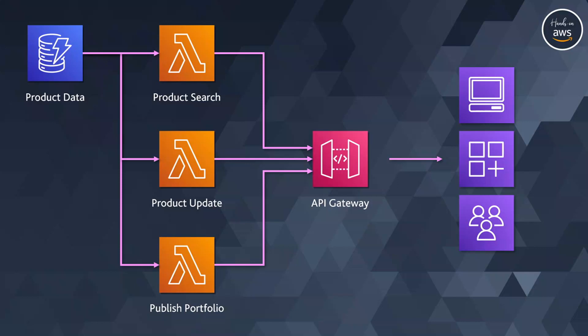At the same time, there is some element of common function or processing of data across these Lambda functions. Let's say all three Lambda functions retrieve product data from the backend store, load it into a product class, and apply the same validations or transformations. If you have hundreds of these Lambda functions dealing with similar data structures, you might end up replicating identical code across multiple functions.